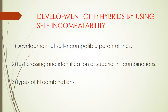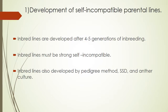Development of F1 hybrids using self-incompatibility requires: development of self-incompatible parental lines, then test crossing and identification of superior F1 combinations, then types of F1 combinations. For parental line development, inbred lines are developed after 4-5 generations of inbreeding; inbred lines must be strongly self-incompatible; inbred lines are also developed by pedigree method, SSD, and anther culture.